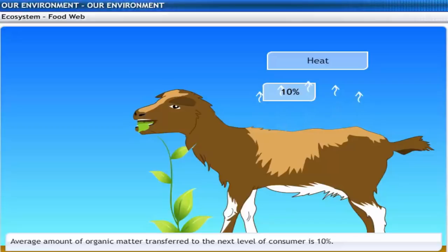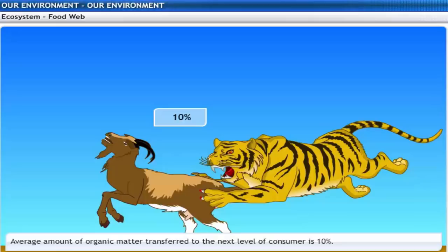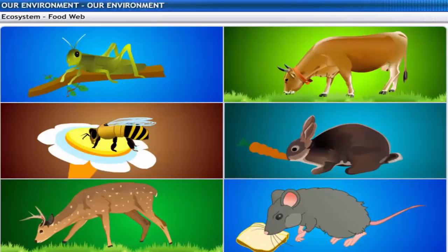Therefore, ten percent can be taken as the average value for the amount of organic matter that reaches the next level of consumers. With only ten percent of energy reaching the next level, isn't it difficult to manage the ecosystem? Well, it certainly limits the number of trophic levels in a food chain. There are generally a greater number of individuals at the lower trophic levels of an ecosystem.